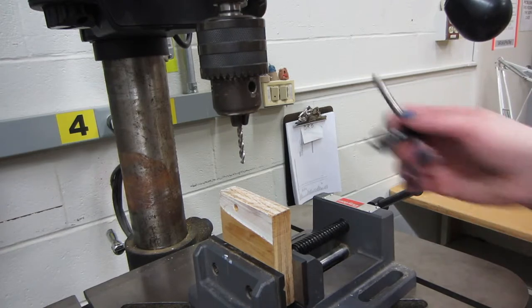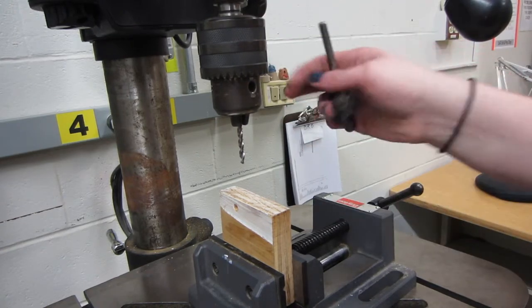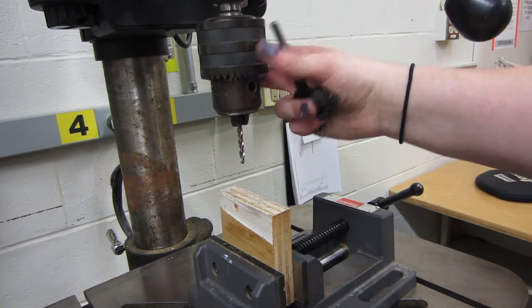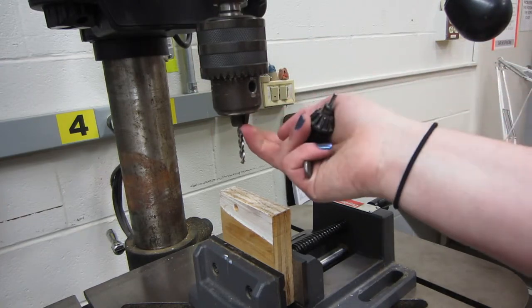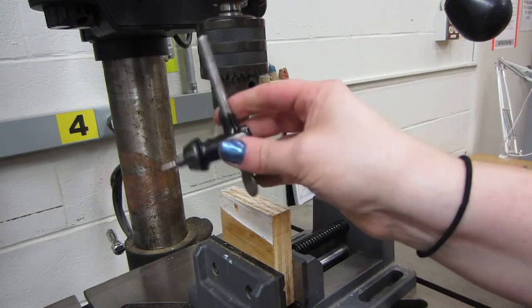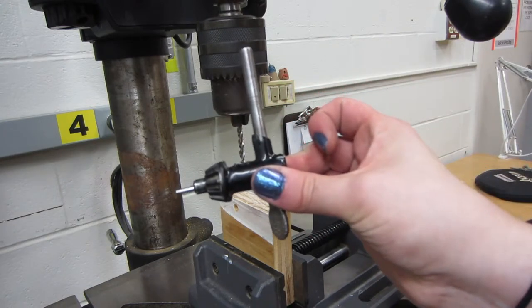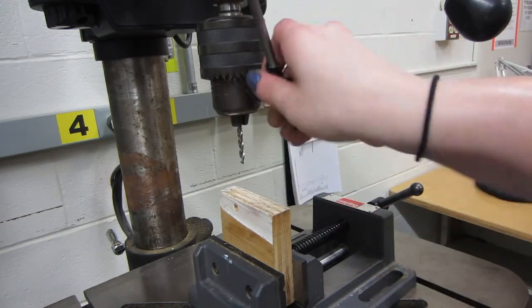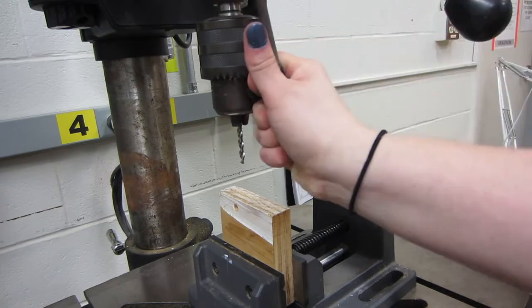So here we are looking up real close at the chuck on a drill press. It's the same way that a power drill chuck is set up—this is just a bigger one. It's got those three fingers up there, and when you turn, you can open and close the chuck. With a drill press, you've got a chuck key because it's a little bit harder to open and close the chuck, so you've got to put the key in there.